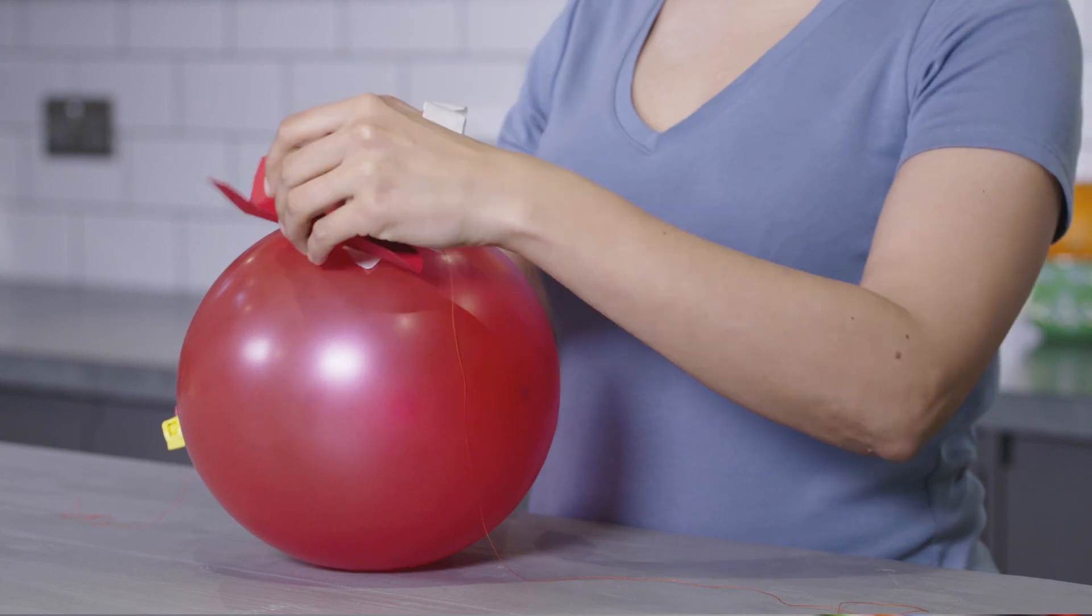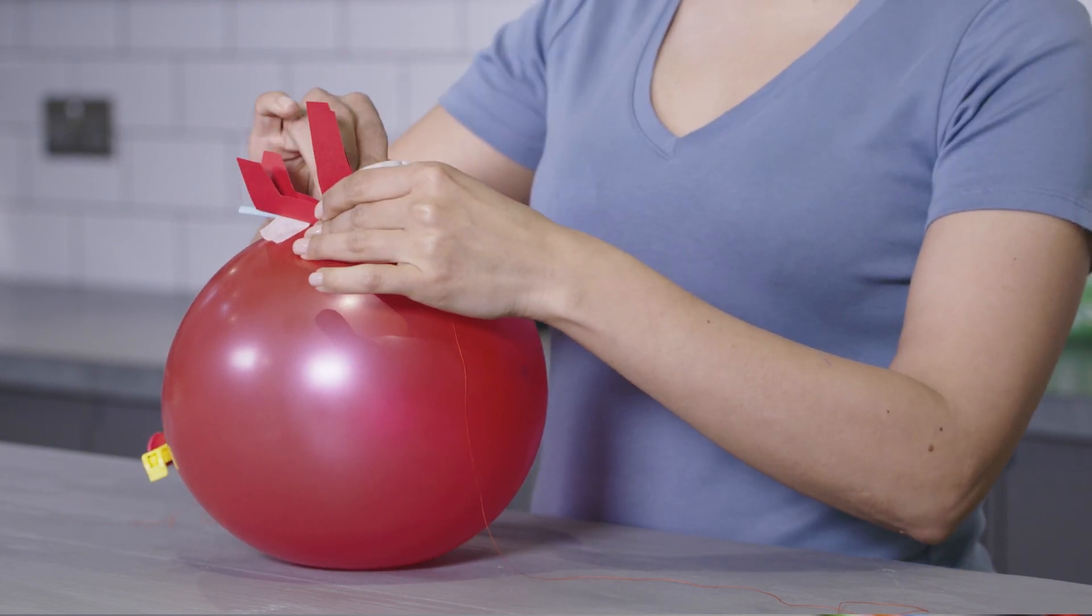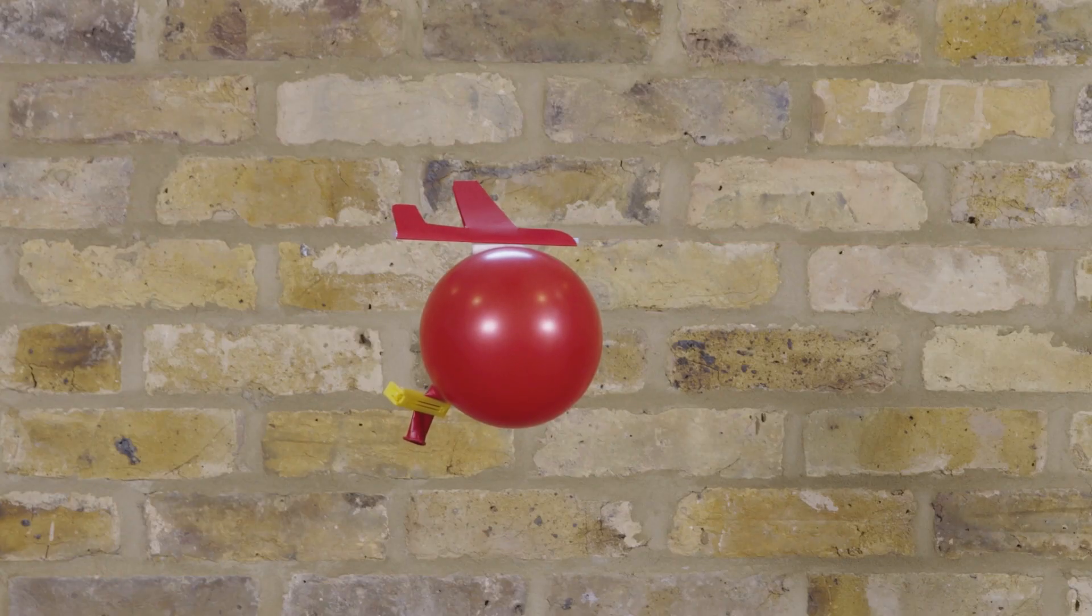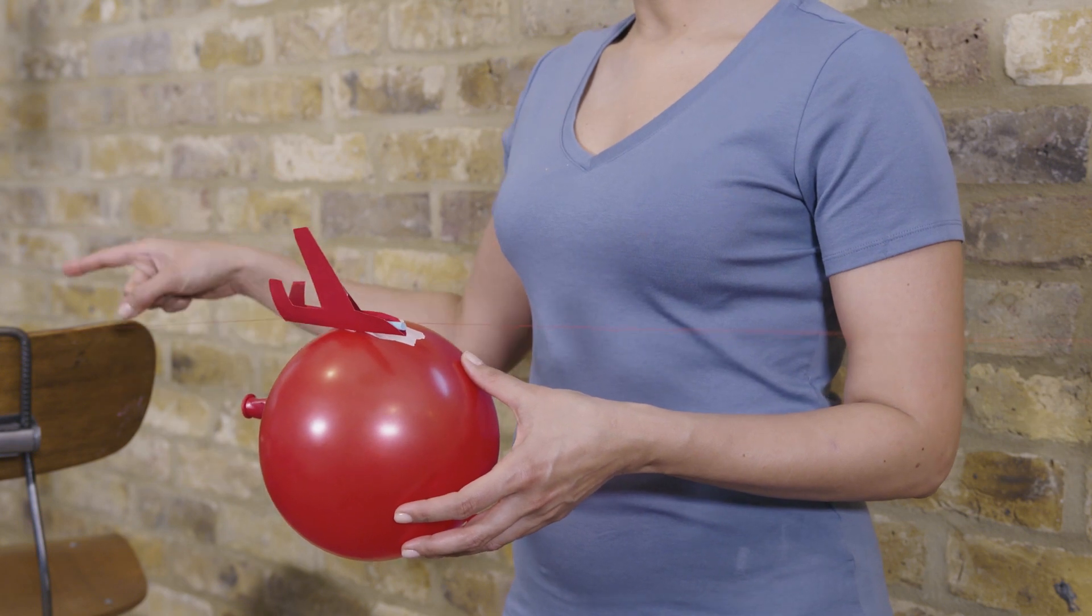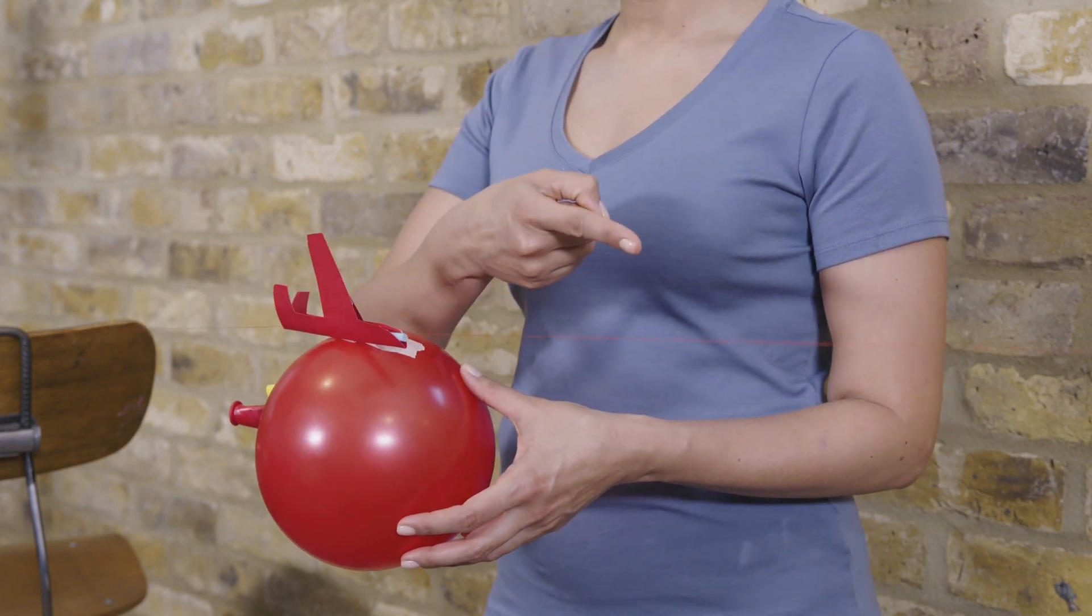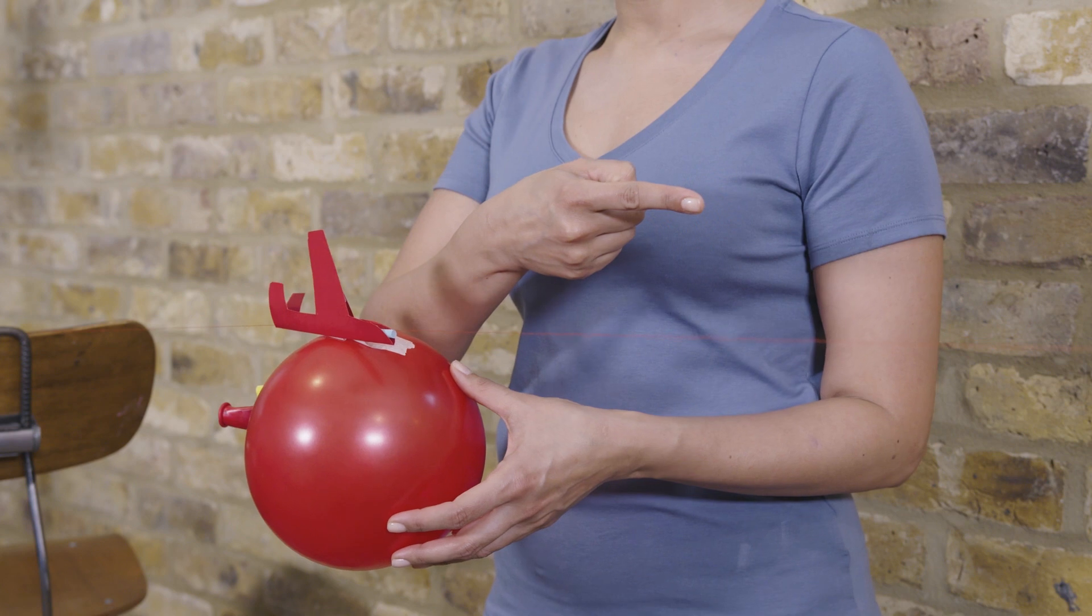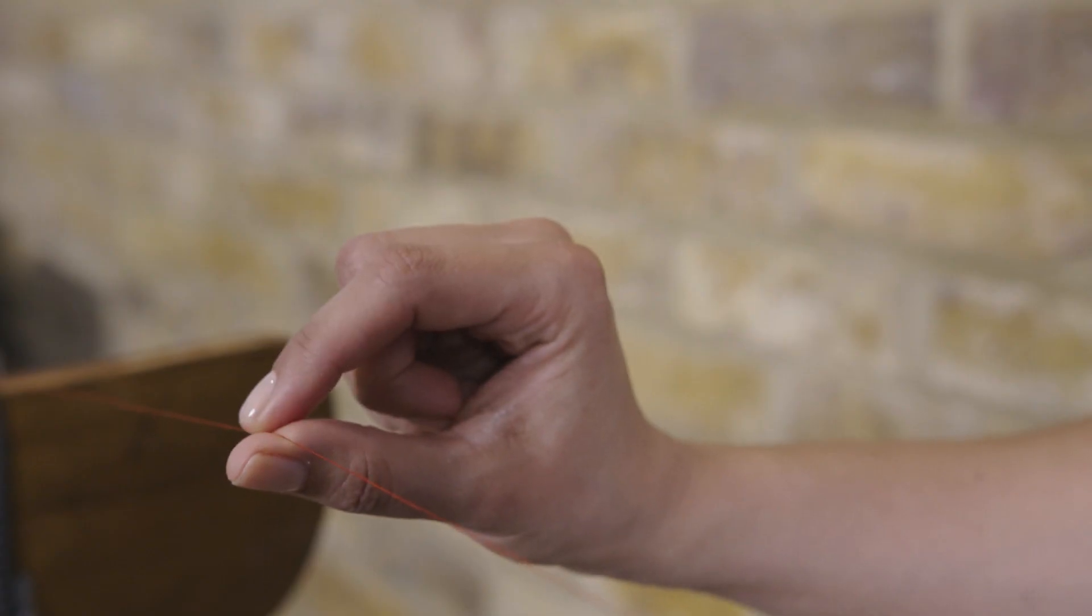For a bit of fun, we've made a paper aeroplane to make our balloon look the part. But you don't need to. You'll see we've tied the string to a chair on this side and a table on the other so that it's flat. This is the path the aeroplane will travel on.